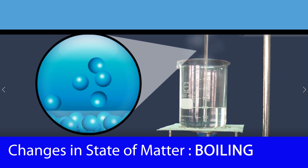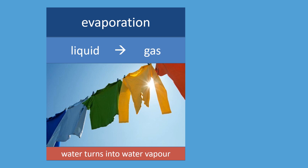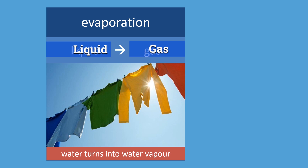What is evaporation? During evaporation, liquid turns into gas. For example, if you dry some clothes under the hot sun, the clothes dry after a few hours. This is because water turned into water vapor.